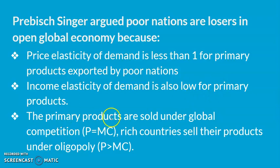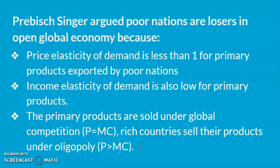Third, primary products are sold under a global competitive market, where price equals marginal cost (P = MC). Whereas rich nations sell their products under oligopoly, where price is greater than MC. So rich nations enjoy super normal profits.